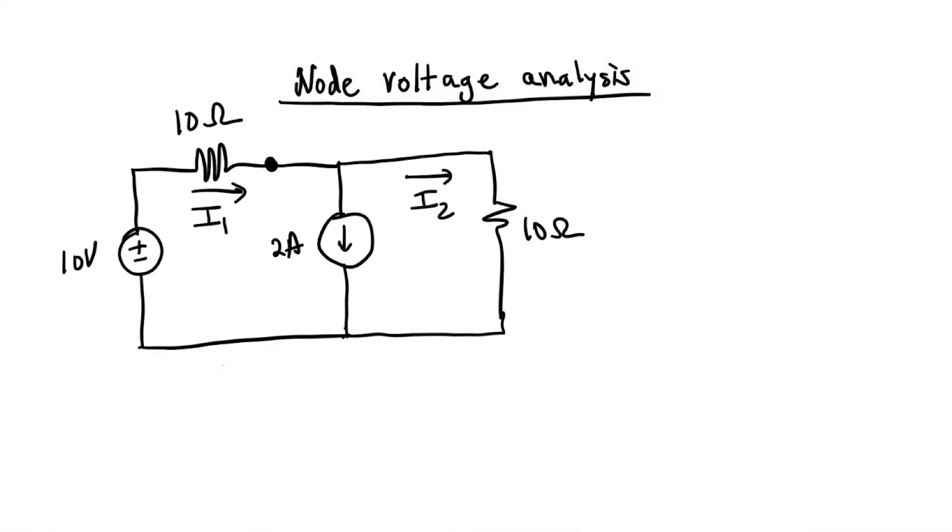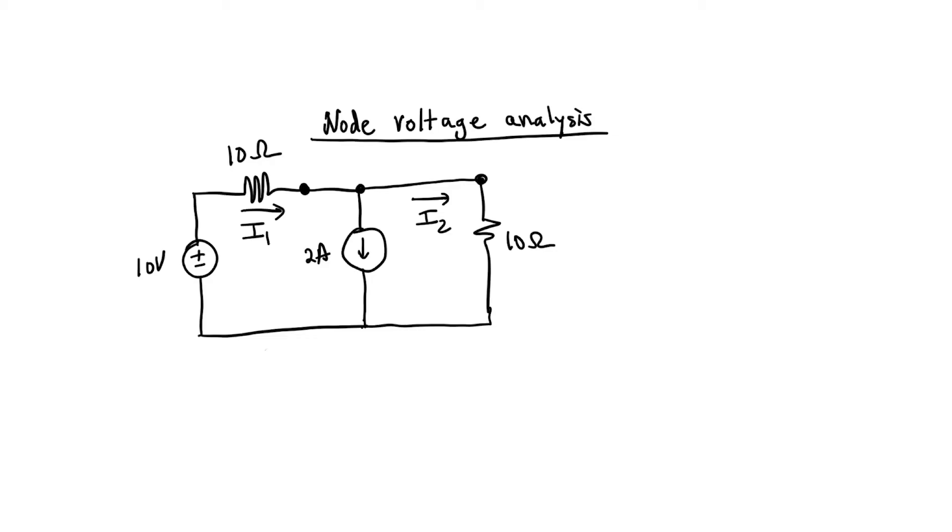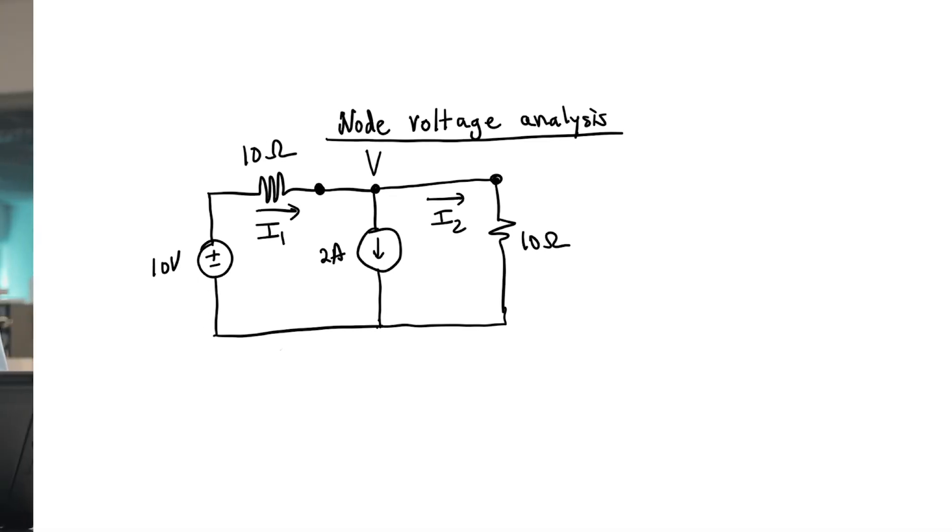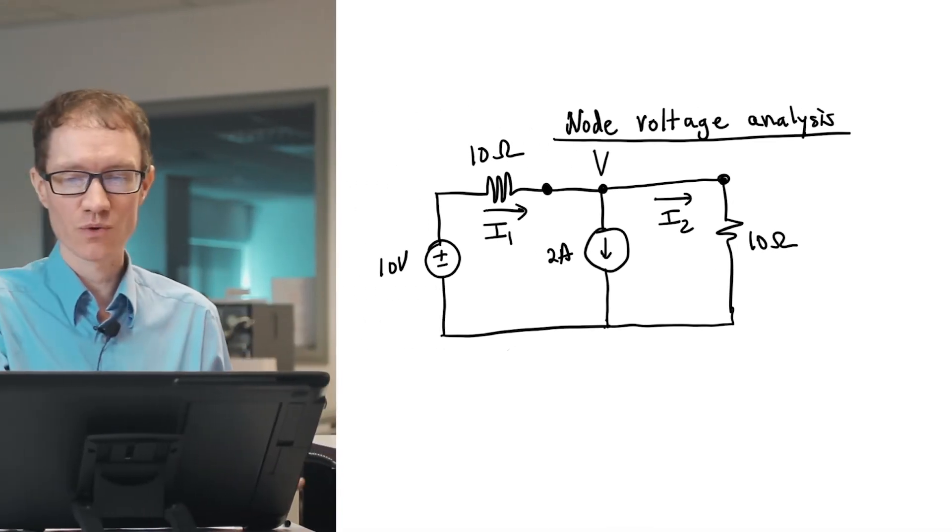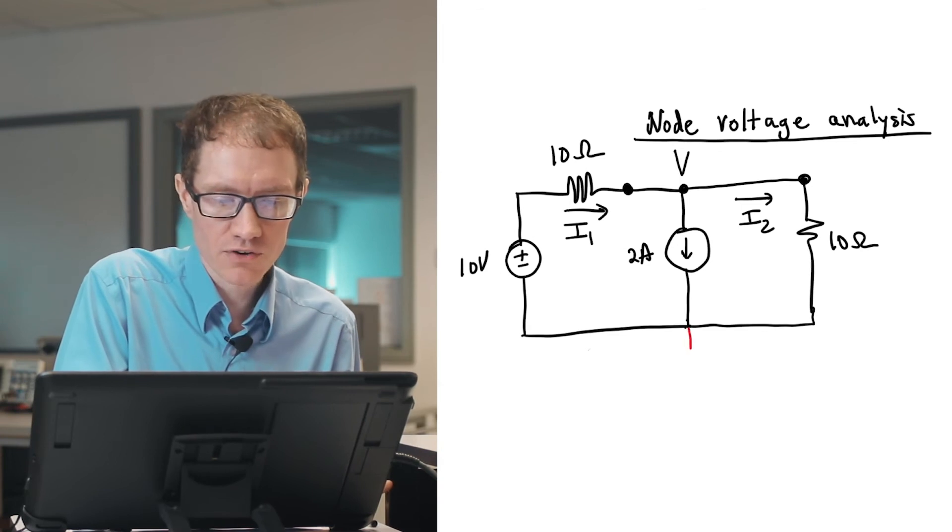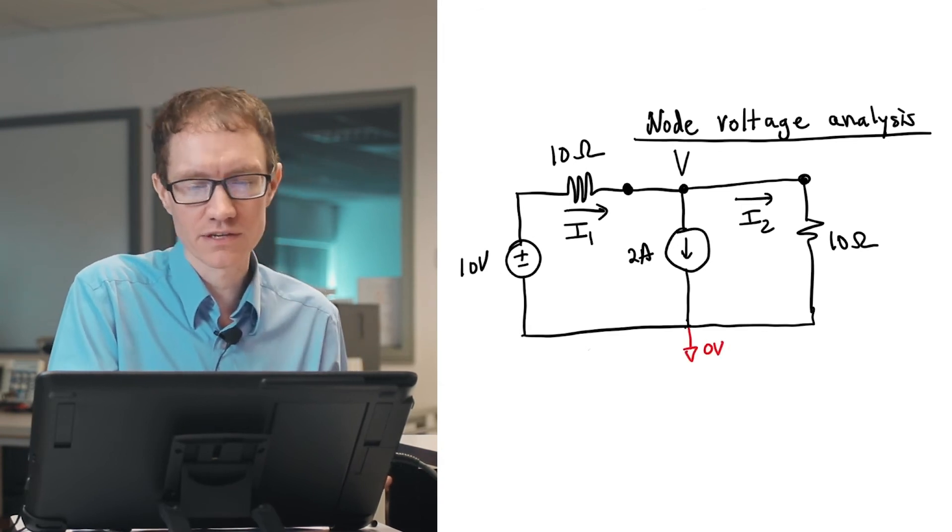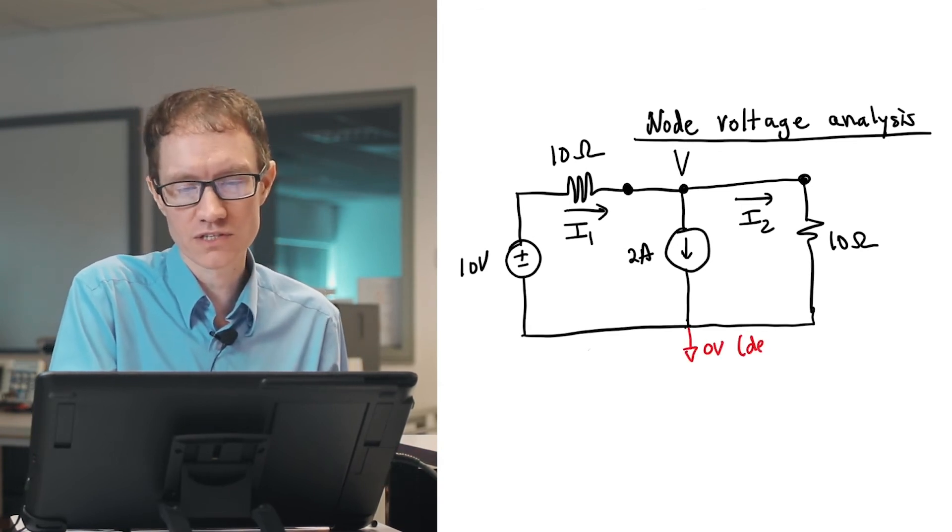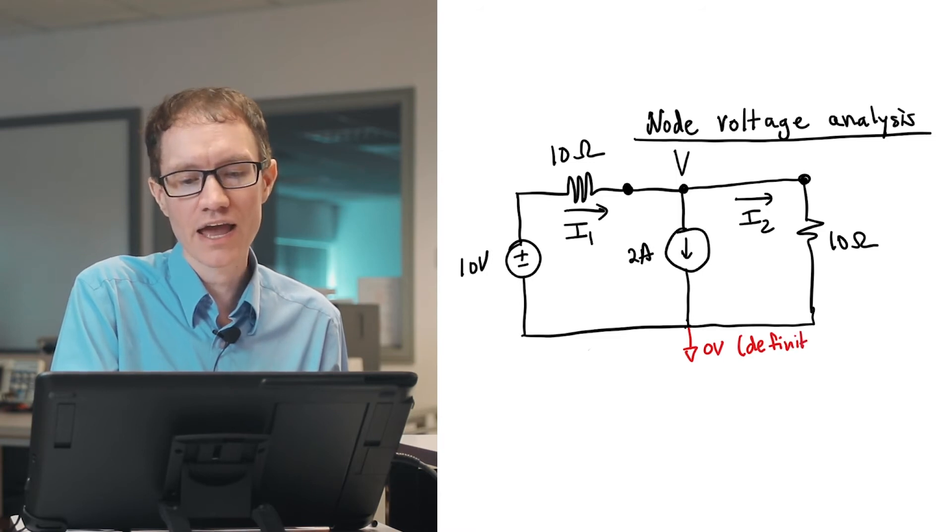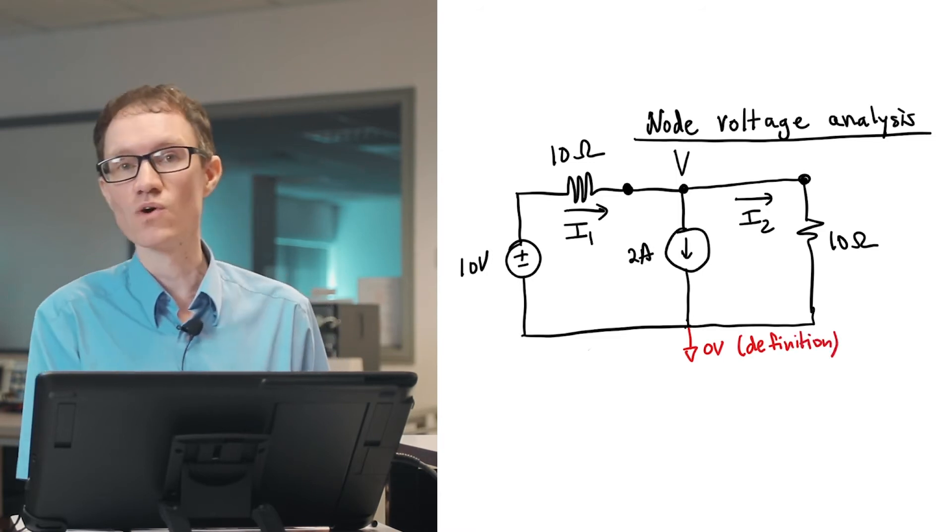The node that I have labeled here, it's the same as this node, it's the same as this node. Sometimes in circuits we might label multiple nodes, but because they're all connected with a wire, mathematically they're all the same point. Let's now use the node voltage analysis and let's label this V. V with respect to what, right? So we need to give it a common ground. So let's define this as zero volts. And this is my definition.